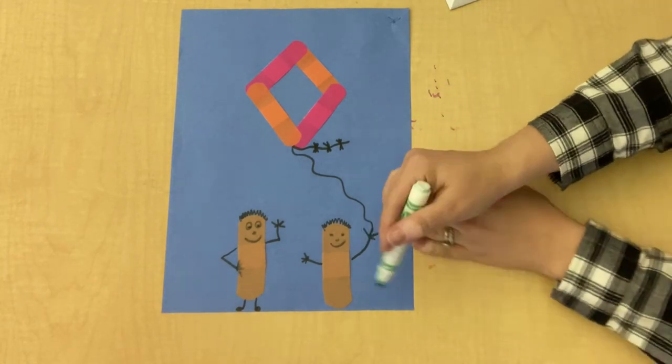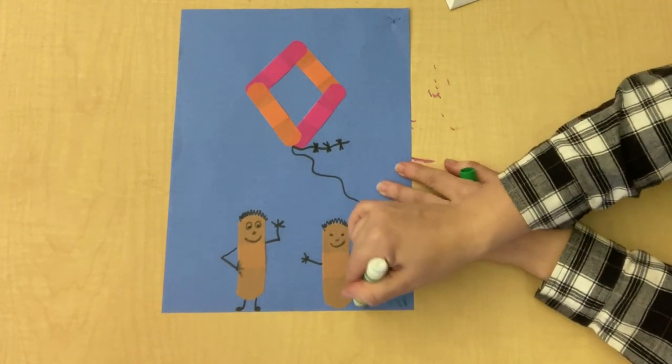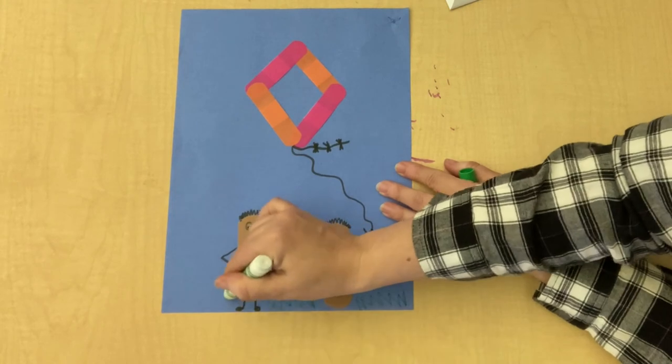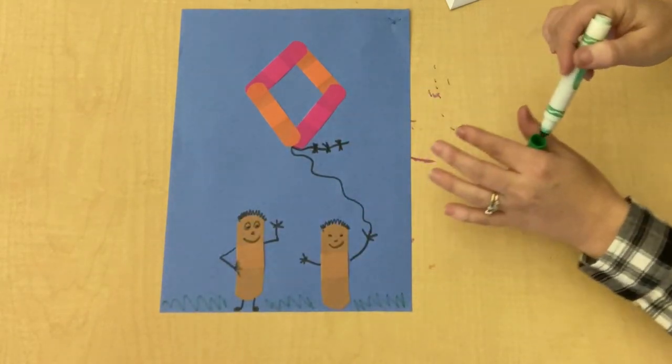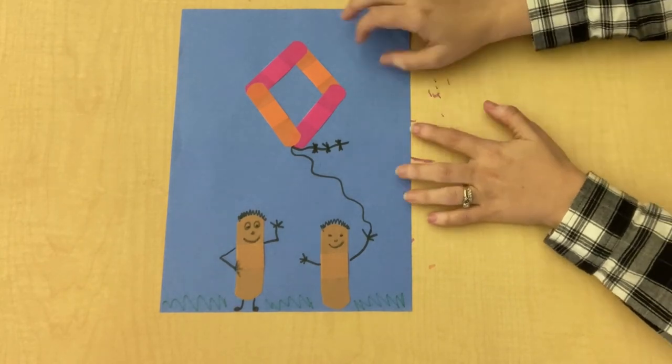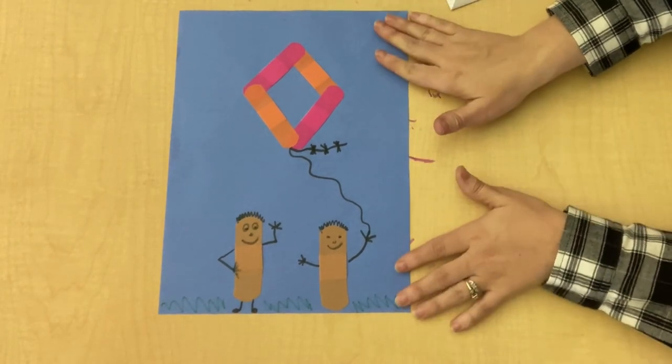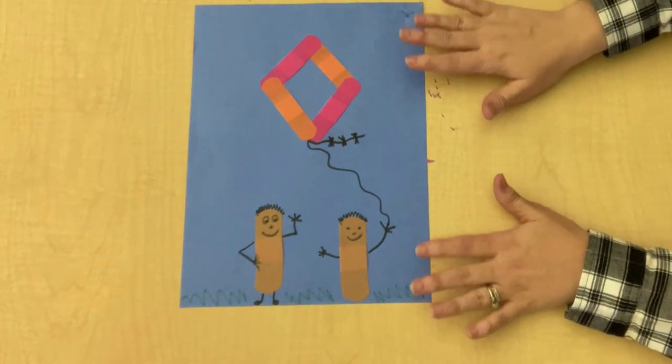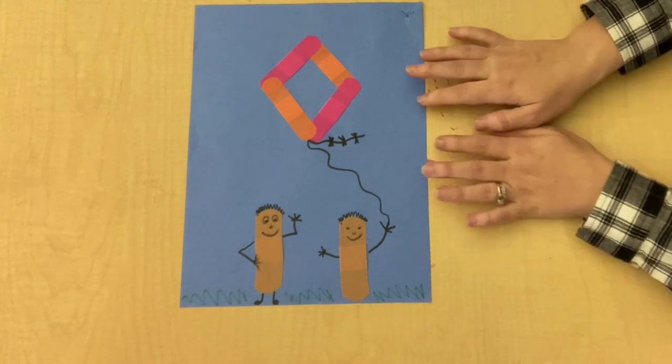If you have other markers and crayons, you can also draw some extra things on your picture, like some grass, or you can add the sun at the top. If you have construction paper, you can cut out a sun and glue it on there. So get creative with your drawing after you finish putting all of your band-aids on there.